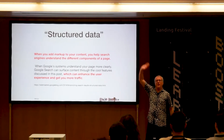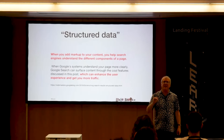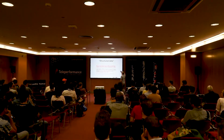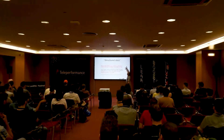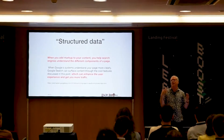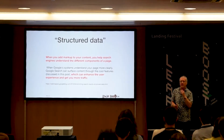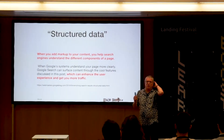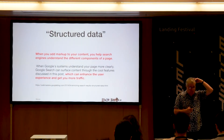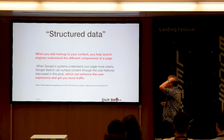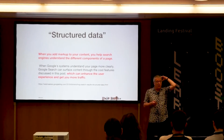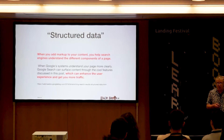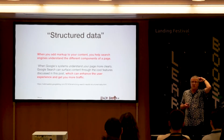Incredibly useful, doesn't cost you anything to write, and doesn't get in the way for people who don't use assistive technologies. Put your hand up if your boss has ever said 'please make this site rank lower on Google.' It doesn't just help people with a disability — it also helps SEO. Google recently published numbers: 'When you add markup to your content, you help search engines understand the different components of a page. When Google systems understand your page more clearly, Google Search can surface content through features that enhance user experience and get you more traffic.' Eventbrite saw a 100% increase in year-on-year traffic from search. Job Repeater saw a 115% increase in organic traffic and a 270% increase in new registrations. Rakuten saw a 2.7x increase in traffic from search engines.